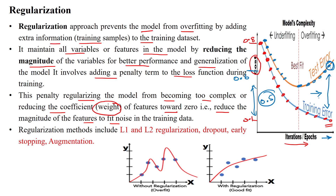This large gap is called variance — high variance between the training error and the testing error. This graph pattern is showing that the model is overfitting.